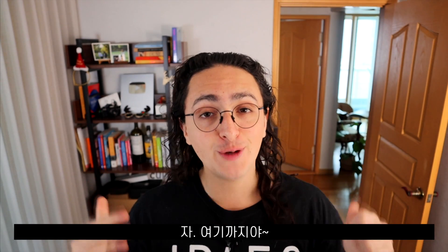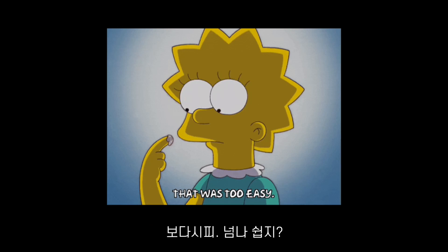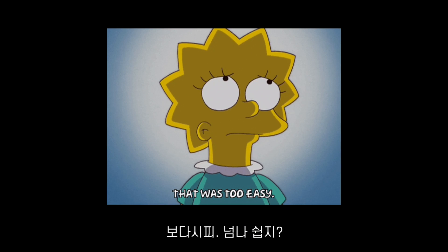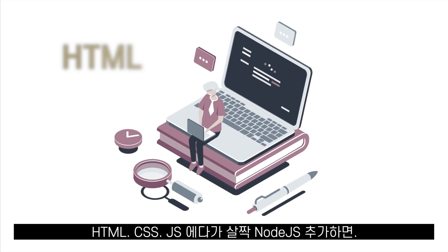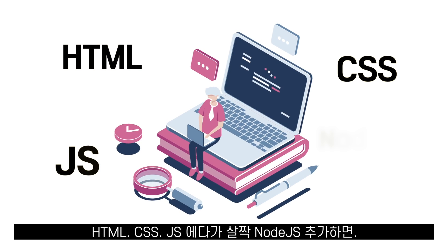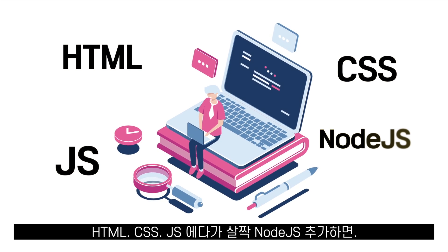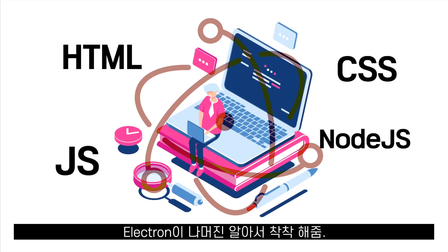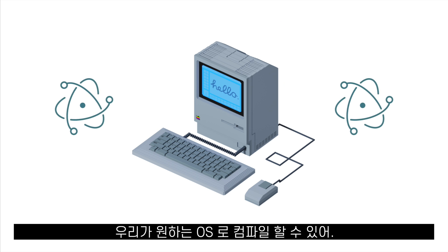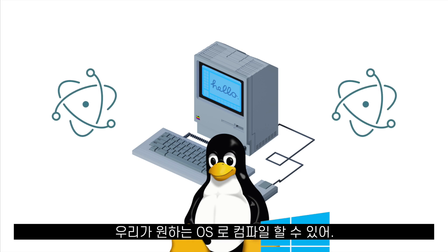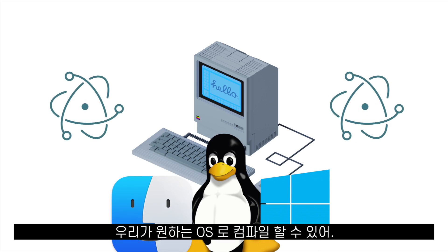And that's it — that's all we had to do. As you can see, it's not hard at all. All we have to do is take HTML, CSS, JavaScript, write a little bit of Node.js, and Electron will do its magic. We can build applications and compile them to whatever operating system we want.